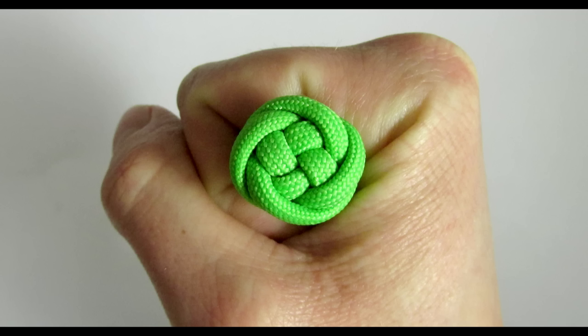Basically this simple design is a Matthew Walker knot made with four strands onto which a crown knot is made. So let's get into it.